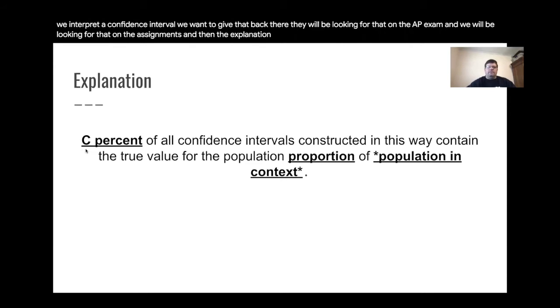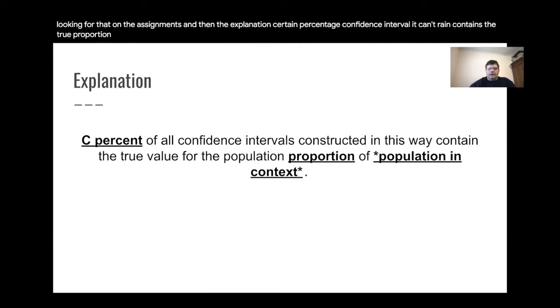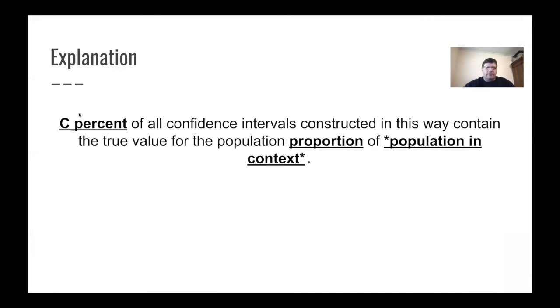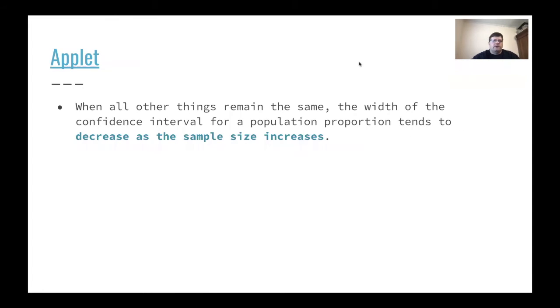So that's how we interpret a confidence interval. We want to give that back. They will be looking for that on the AP exam and we will be looking for that on the assignments. And then the explanation, a certain percentage confidence interval contains the true proportion of whatever we're dealing with. And the population, you want to deal with the context of the problem. I lost my captions. I guess we'll just keep going. I don't feel like those closed captions, I thought those were kind of cool.